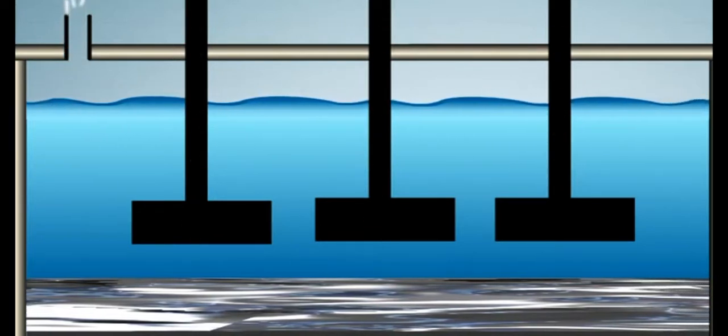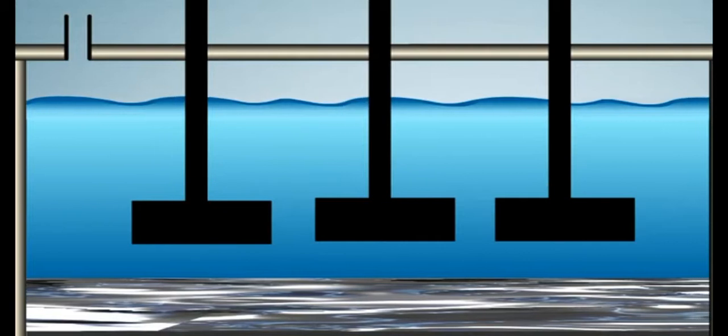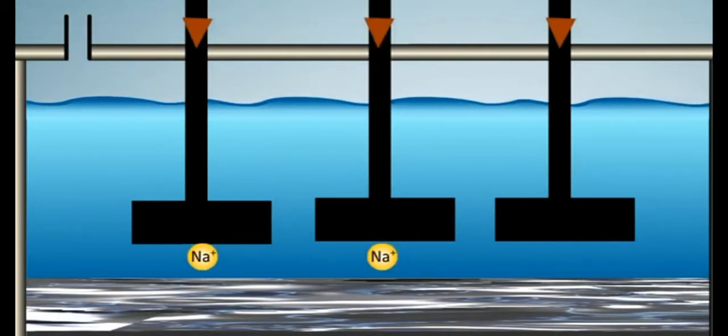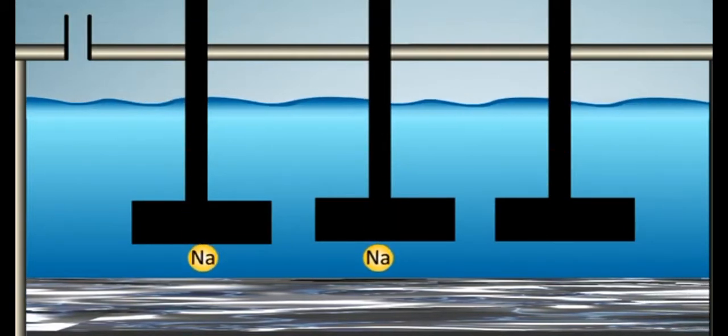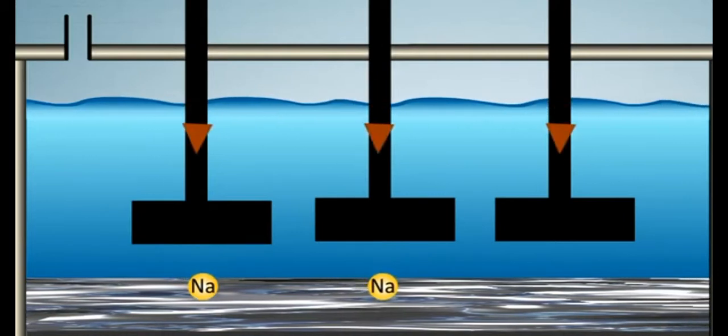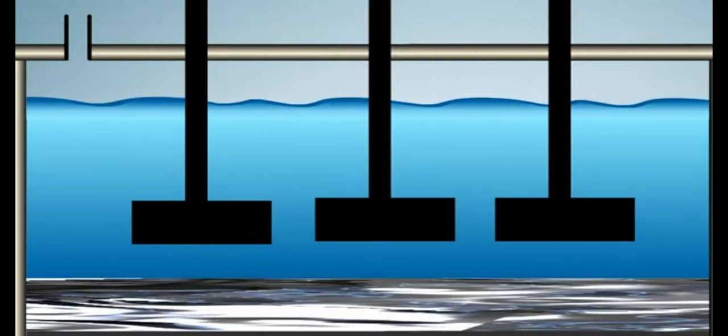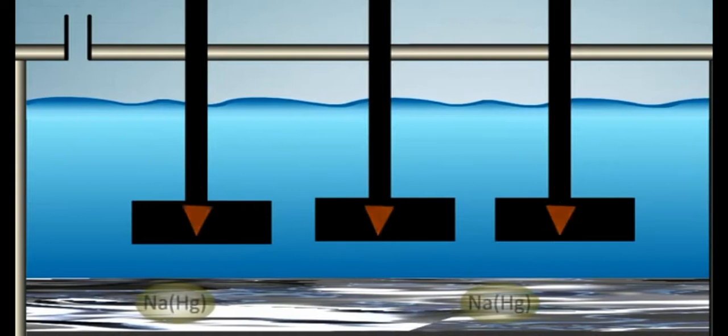At cathode, sodium ions are reduced to sodium atoms by electrons and the sodium atom so produced reacts with mercury which is the cathode and forms sodium amalgam.